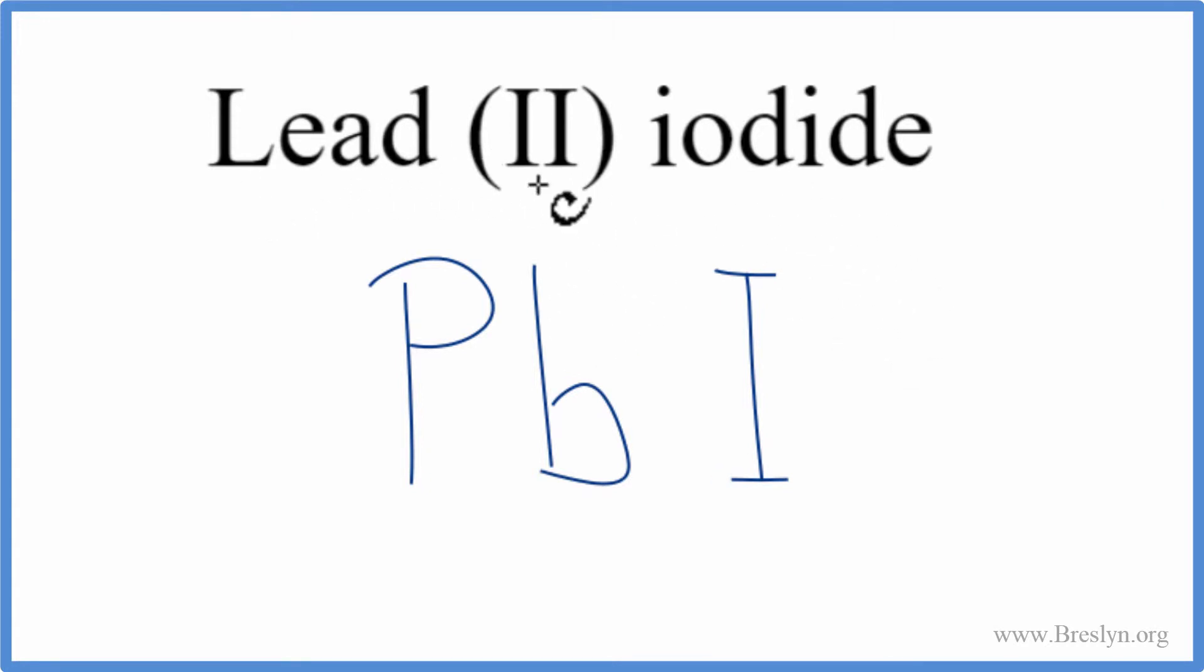Lead, it tells us right here in the name that Roman numeral II means it has an ionic charge of 2+. Iodine, we look on the periodic table, that's 1-.